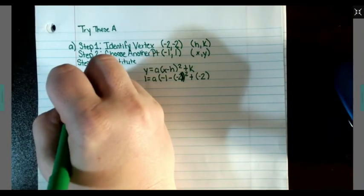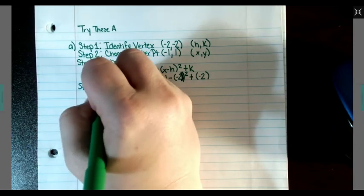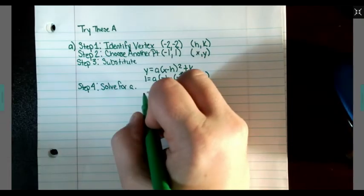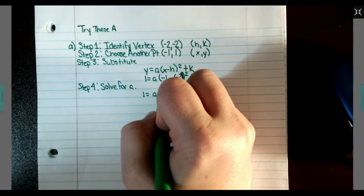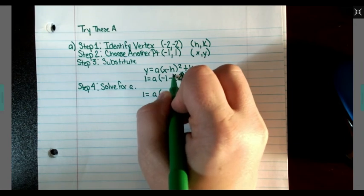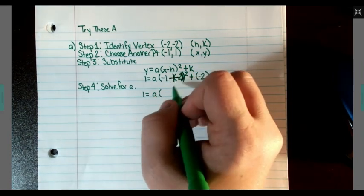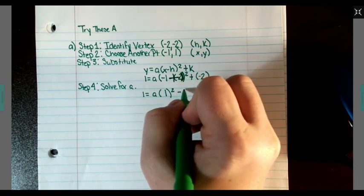Step 4: Solve for A. So we have 1 equals A. Remember this is like a broken plus. So negative 1 plus 2 is 1 squared minus 2.